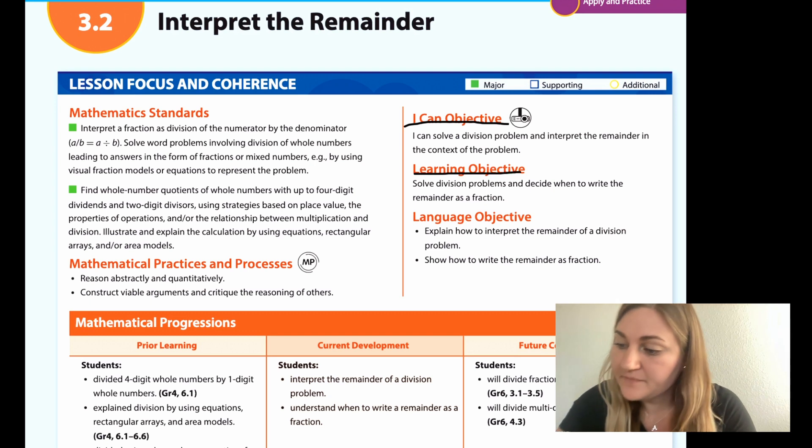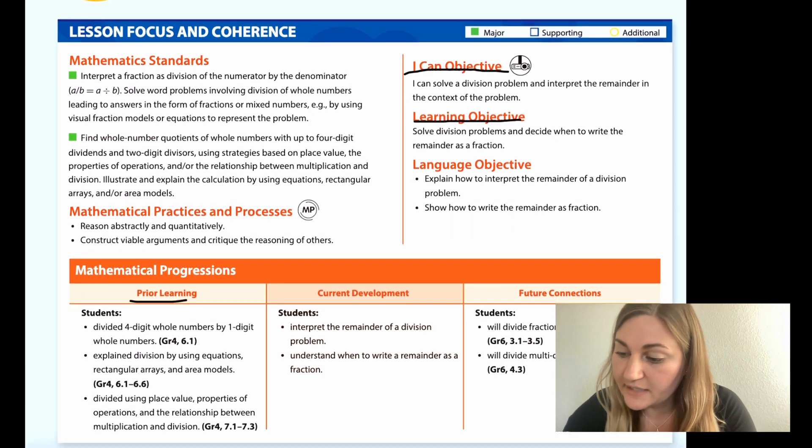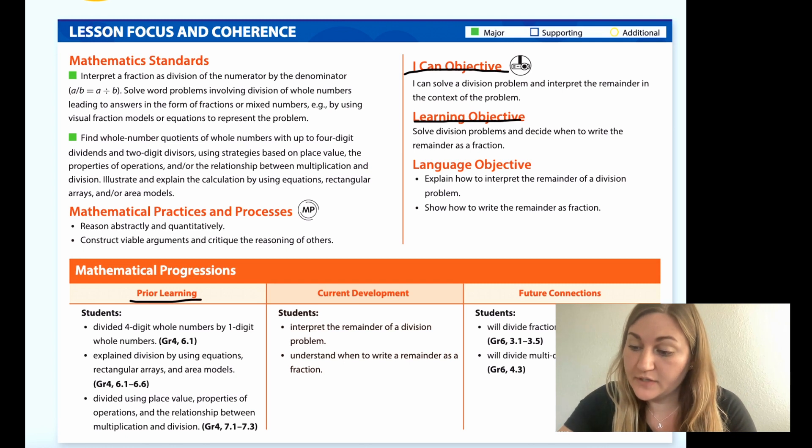And the learning objective: solve division problems and decide when to write the remainder as a fraction. In the prior learning, students divided four-digit whole numbers by one-digit whole numbers. Students explained division by using equations, rectangular arrays, and area models. Students divided using place value properties of operations and the relationship between multiplication and division.